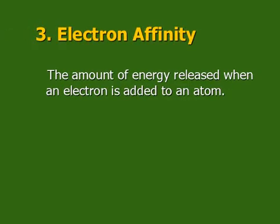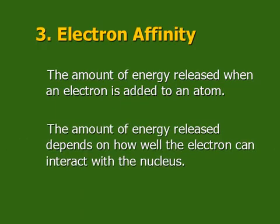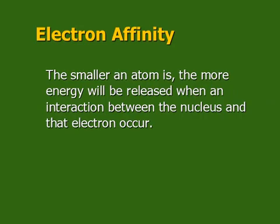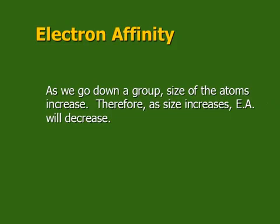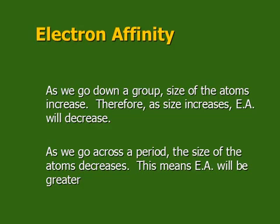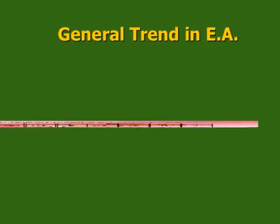Let's look at our third trend: electron affinity. This is kind of the opposite of ionization energy — in ionization energy we were taking away an electron, now we're going to add one. When you add an electron, it can interact with the atom and some energy is released, and that's what we're measuring. The amount of energy released depends on how well the electron can interact with the nucleus. If we have a small atom, that added electron gets really close to the nucleus, there's a big interaction and a big energy release. So as we go down a group, atom size increases and electron affinity decreases. Across a period, atoms get smaller so more energy is released when we add an electron, meaning electron affinity increases.